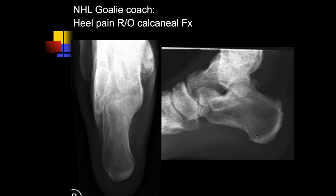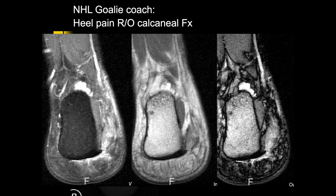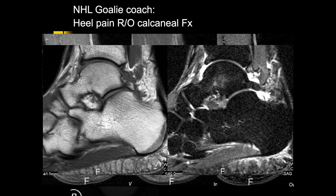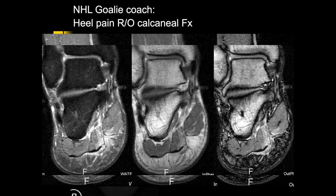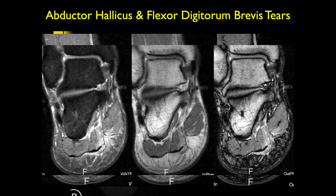Heel pain, rule out calcaneal fracture. There's an oblique lucency through the calcaneus on the Harris view, concerning for a fracture — I don't see it as well on the sagittal view. There's a lot of edema around the calcaneus. This could be a tear of the plantar fascia, muscle strain, or muscle injury. Some kids do have stress fractures, but also strains of the flexor hallucis and flexor digitorum brevis muscles.